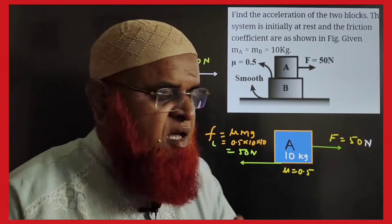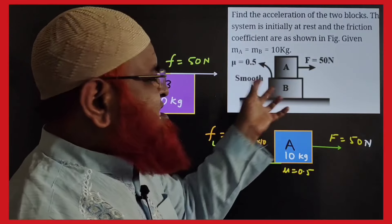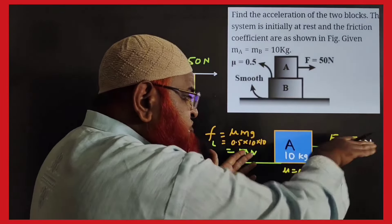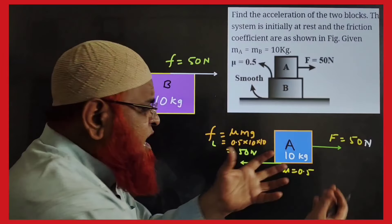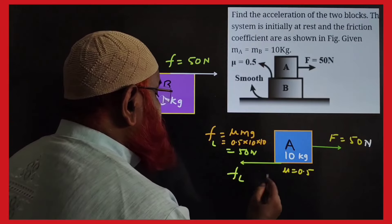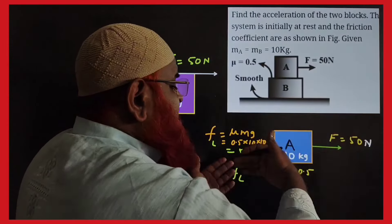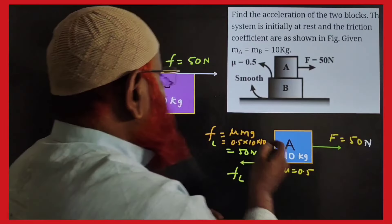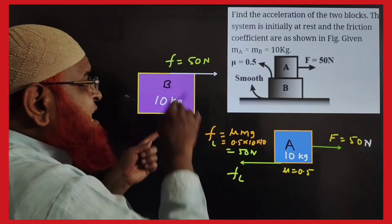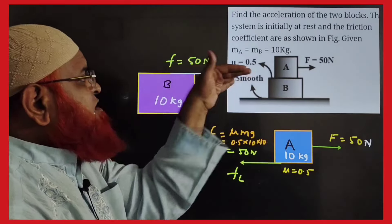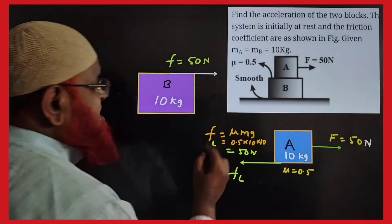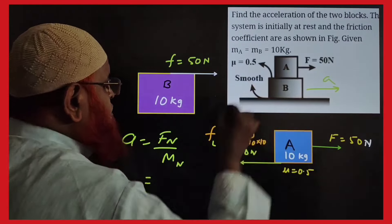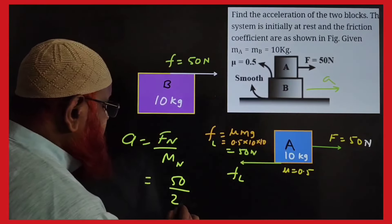Block-over-block: force on upper block is 50 N, limiting friction (mu = 0.5, m = 10 kg) = 50 N acts leftward. Both forces balance, so both blocks move together. Acceleration = net force / net mass = 50 / 20 = 2.5 meters per second squared.